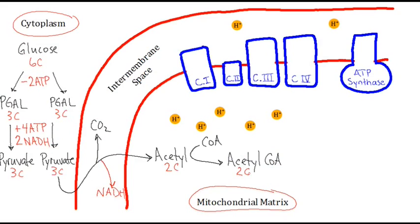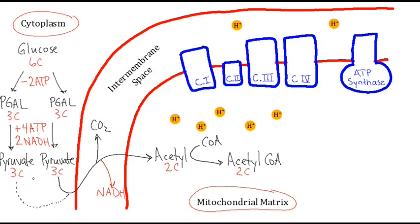To recap the transition reaction: one pyruvate has lost a carbon dioxide and produced an NADH in order to make acetyl. But don't forget — this process has actually happened twice, because there were two pyruvate molecules from that original glucose. So overall, the transition reaction converts two pyruvates into two acetyls, thereby losing two carbon dioxides and producing two NADH molecules, which — just like we saw in glycolysis — will carry electrons to a further stage in the process.